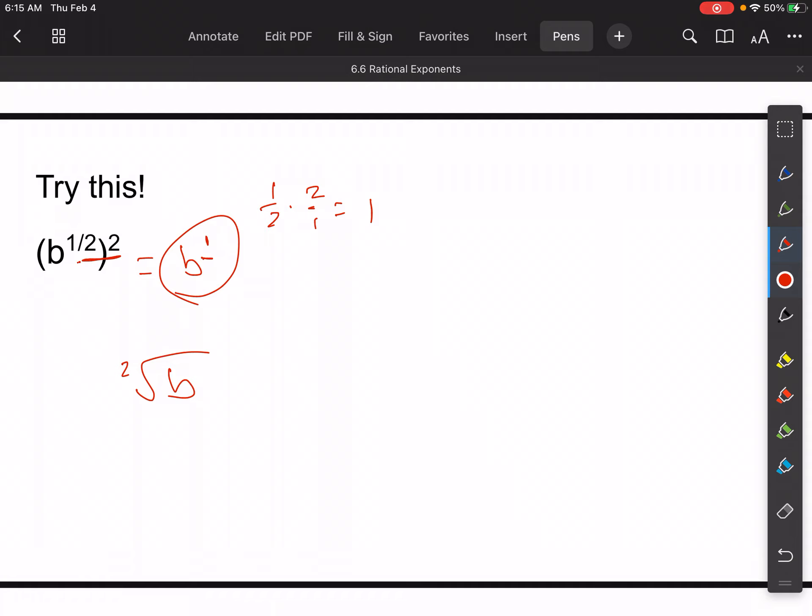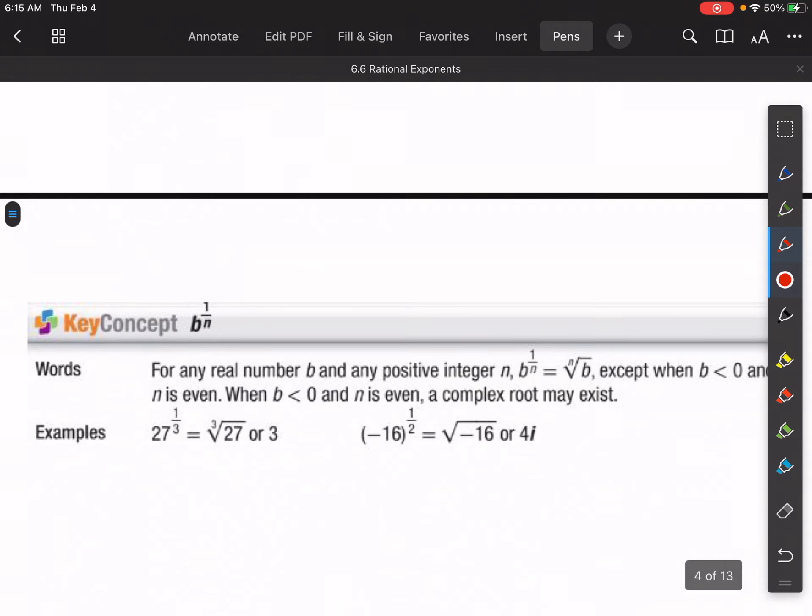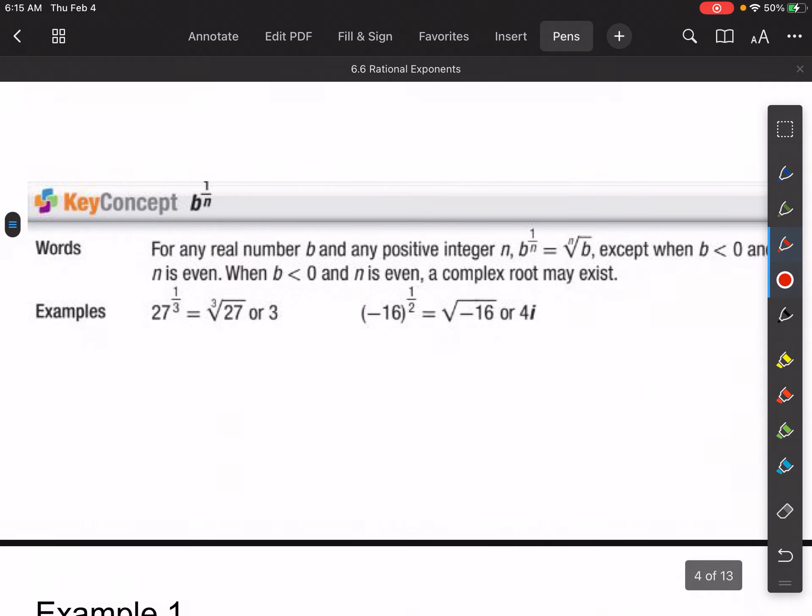Square root of b squared gives me just b back, right? Those cancel. So that's what this key concept is saying here.